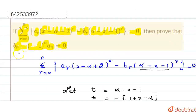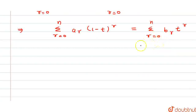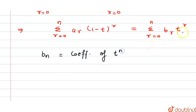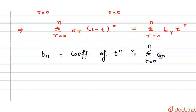Now, we want to calculate and prove that bn minus (-1)^n · an equals 0. Here, bn will be the coefficient of t^n on the right-hand side. Since this whole expression equals the right-hand side, the coefficient of t^n in summation r from 0 to n of ar·(1 minus t)^r must equal bn. We have to calculate that.